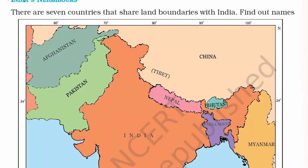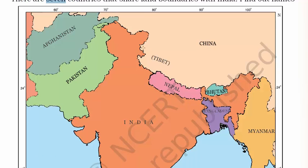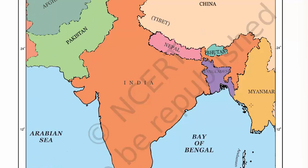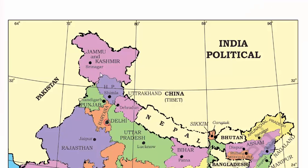Now let's read about the neighbors of India. There are seven countries that share land boundaries with India. They are Pakistan, Afghanistan, China, Nepal, Bhutan, Bangladesh, and Myanmar.